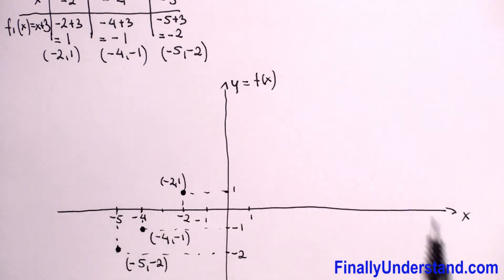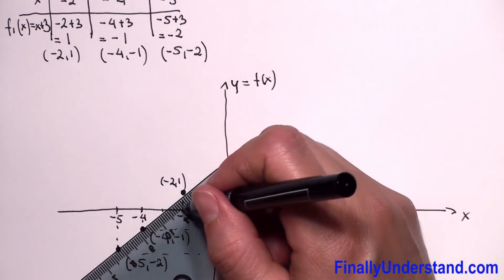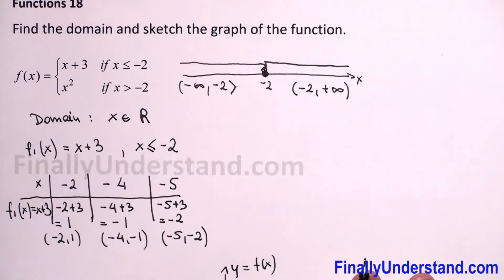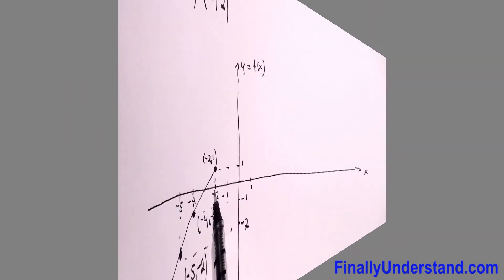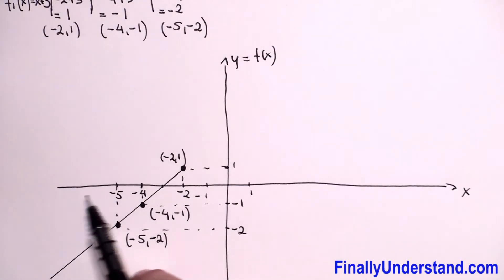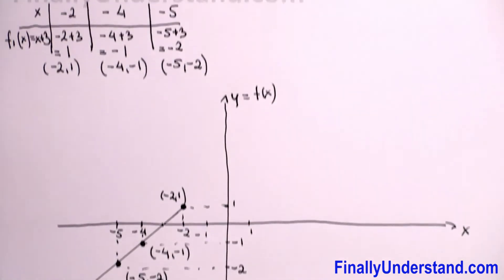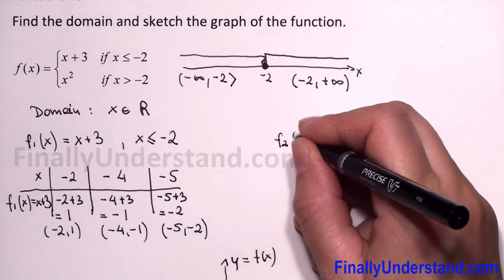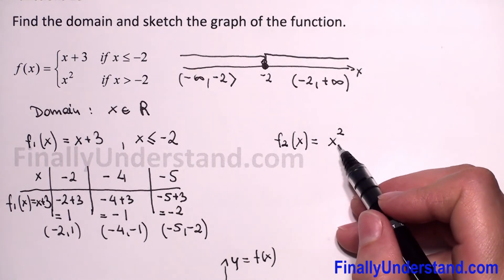Now we connect these points, remembering that we cannot go further than negative 2, because for the first part we consider only x less than or equal to negative 2. So our graph goes from negative infinity to negative 2 only. This is our first function. For the second function, f2 of x equals x squared — a quadratic function whose graph is a parabola.